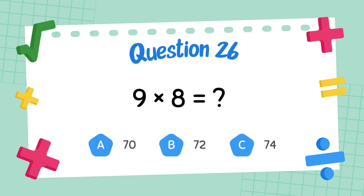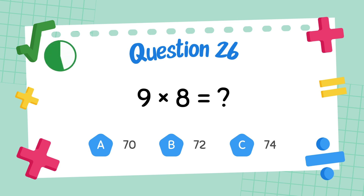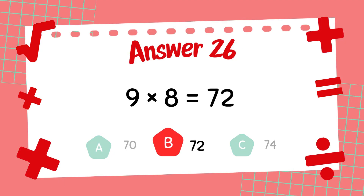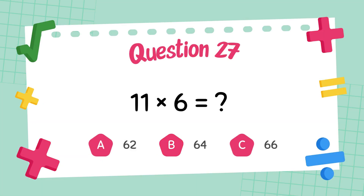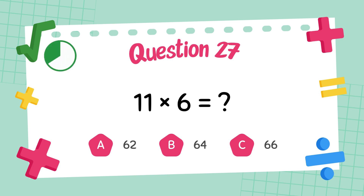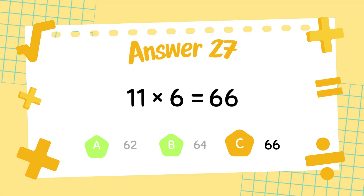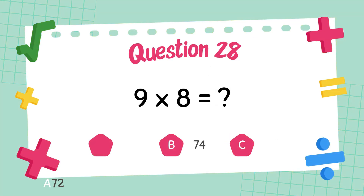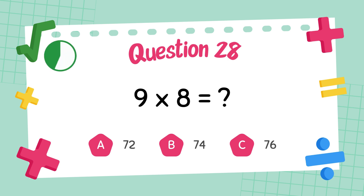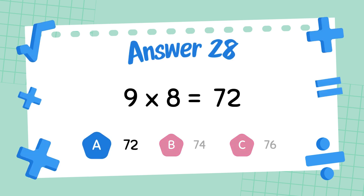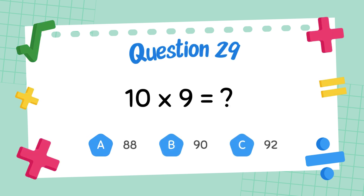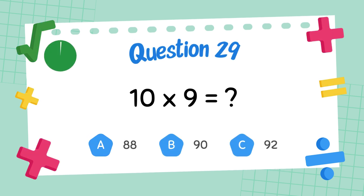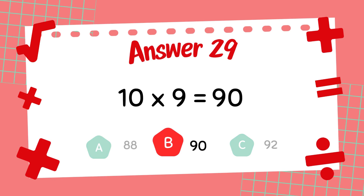What is 7 times 6? The answer is 42. What is 8 times 7? The answer is 56. What is 9 times 8? The answer is 72. What is 10 times 9? The answer is 90.